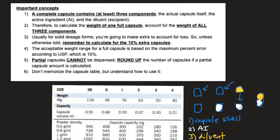Important concept number four: the acceptable weight range for a full capsule is based on the maximum percent error according to USP, which is 10%. Number five: partial capsules cannot be dispensed. We're going to round up if the number of capsules is a partial or decimal capsule amount when calculated.